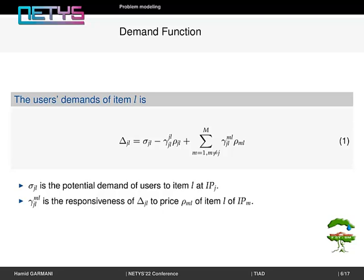Gamma_gl is the responsiveness of demand delta_gl to price rho_ml of item l of infrastructure provider m. The demand delta_gl of item l decreases in price rho_gl and increases in price rho_gm.